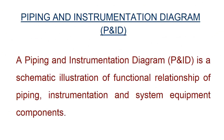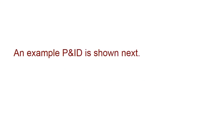A piping and instrumentation diagram is a schematic illustration of the functional relationship of piping, instrumentation, and system equipment components. An example P&ID is shown next.